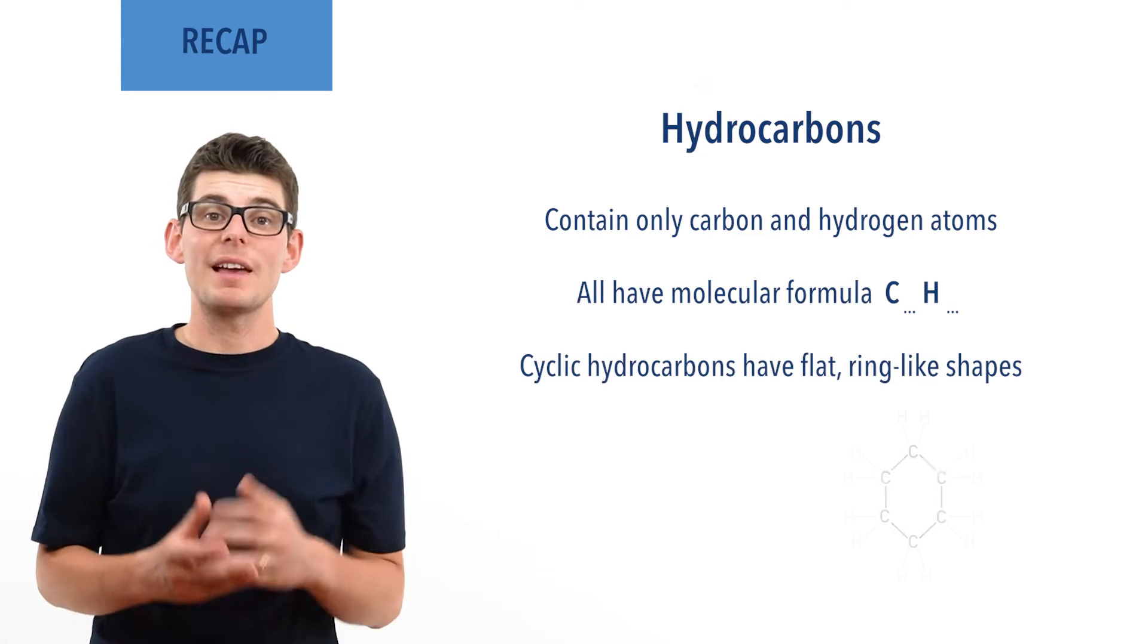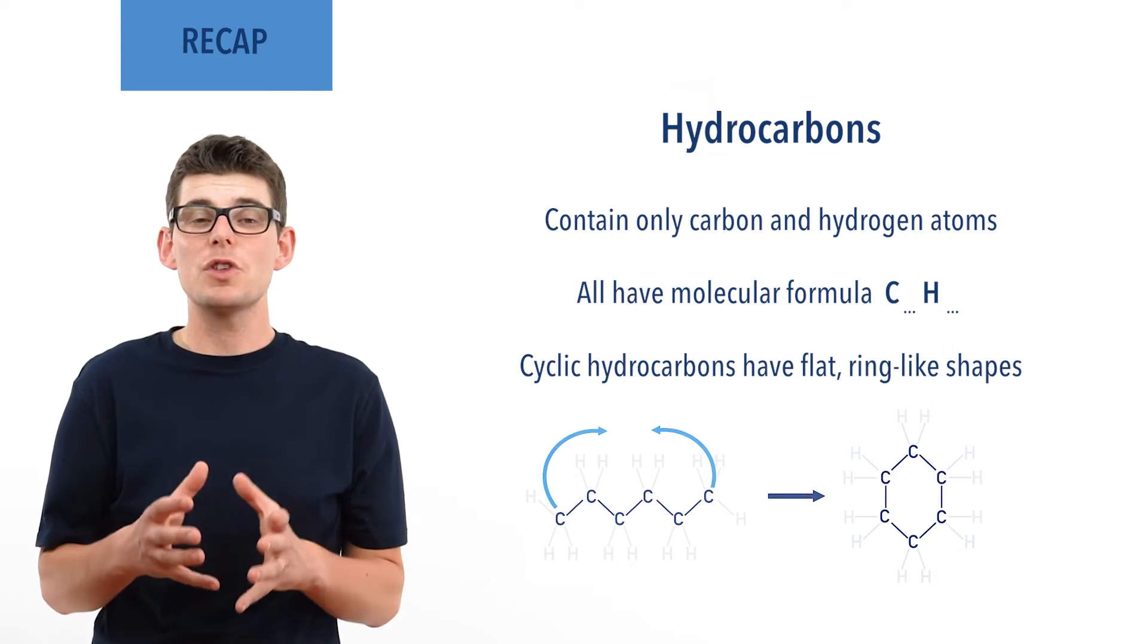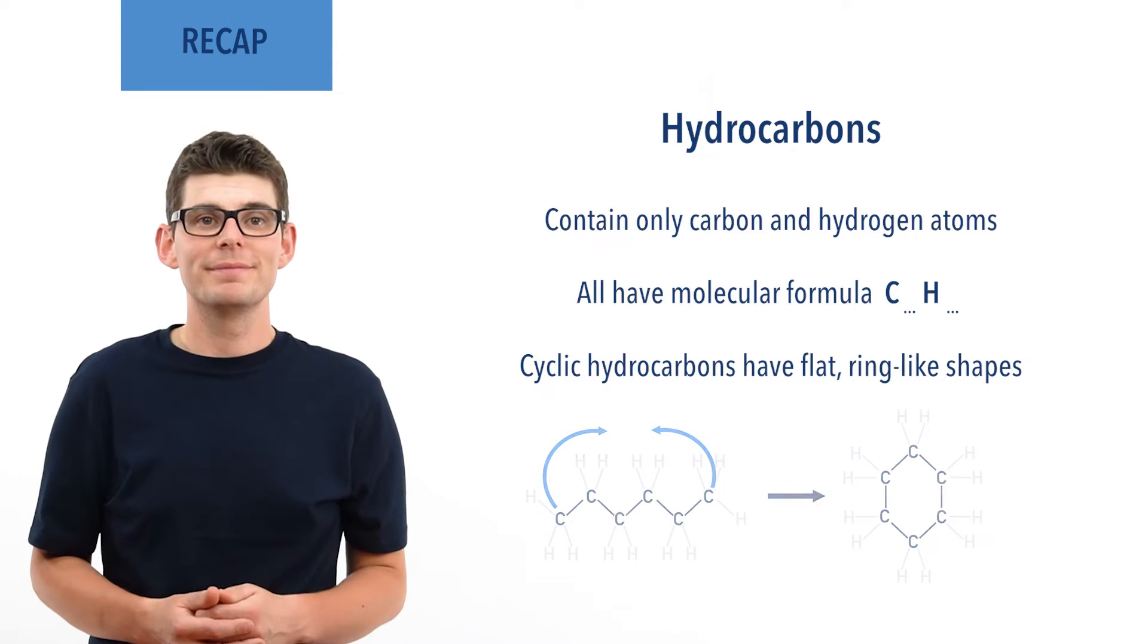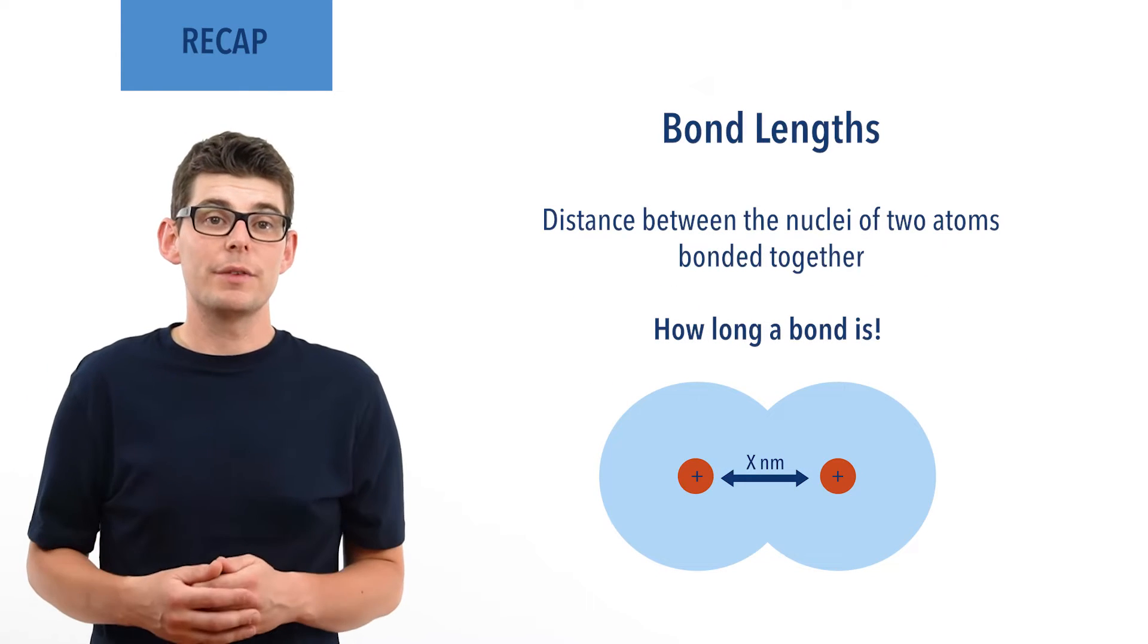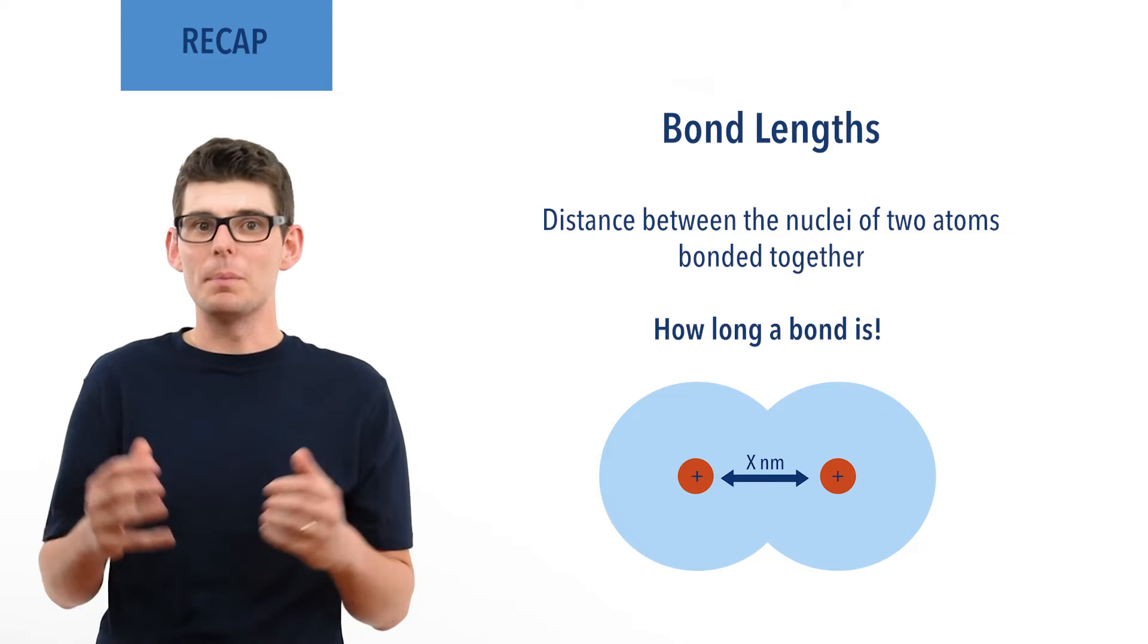Cyclic hydrocarbons have flat ring-like shapes that are formed when a carbon chain bonds back on itself. Bond lengths refer to the distance between the nuclei of two atoms bonded together, so essentially how long a bond is.